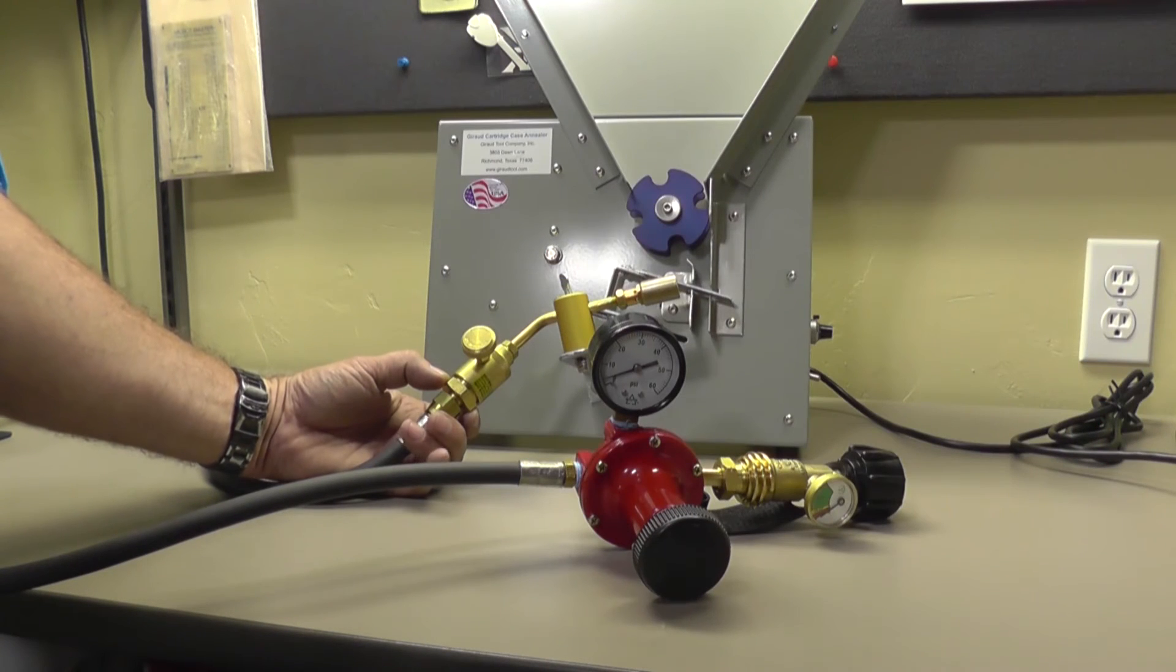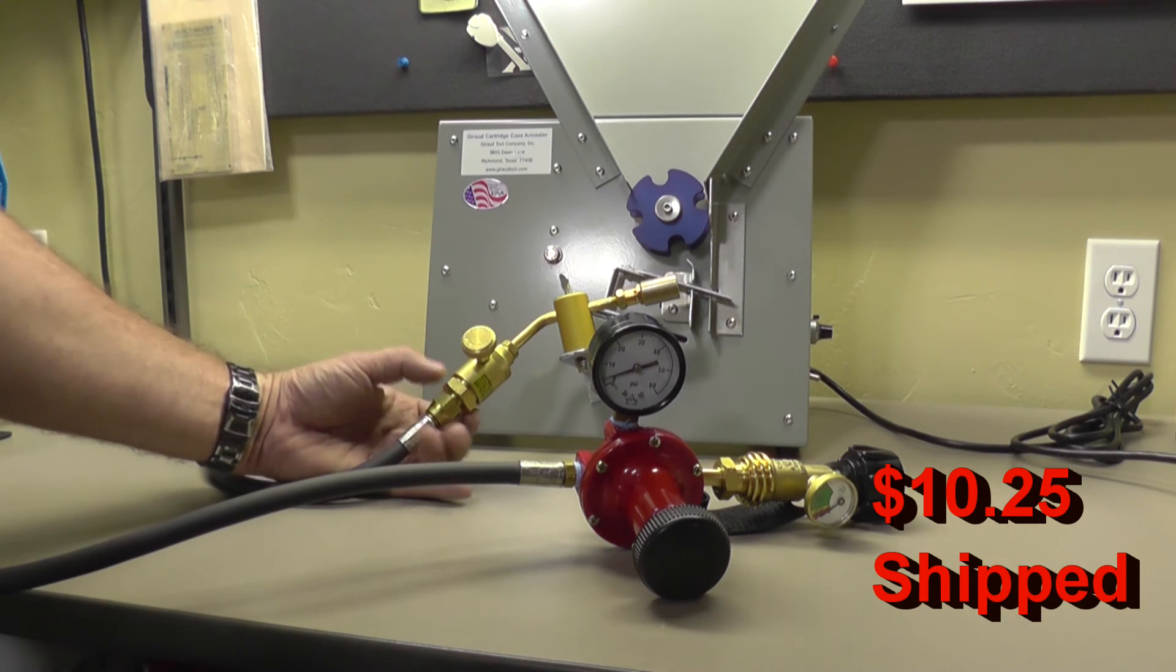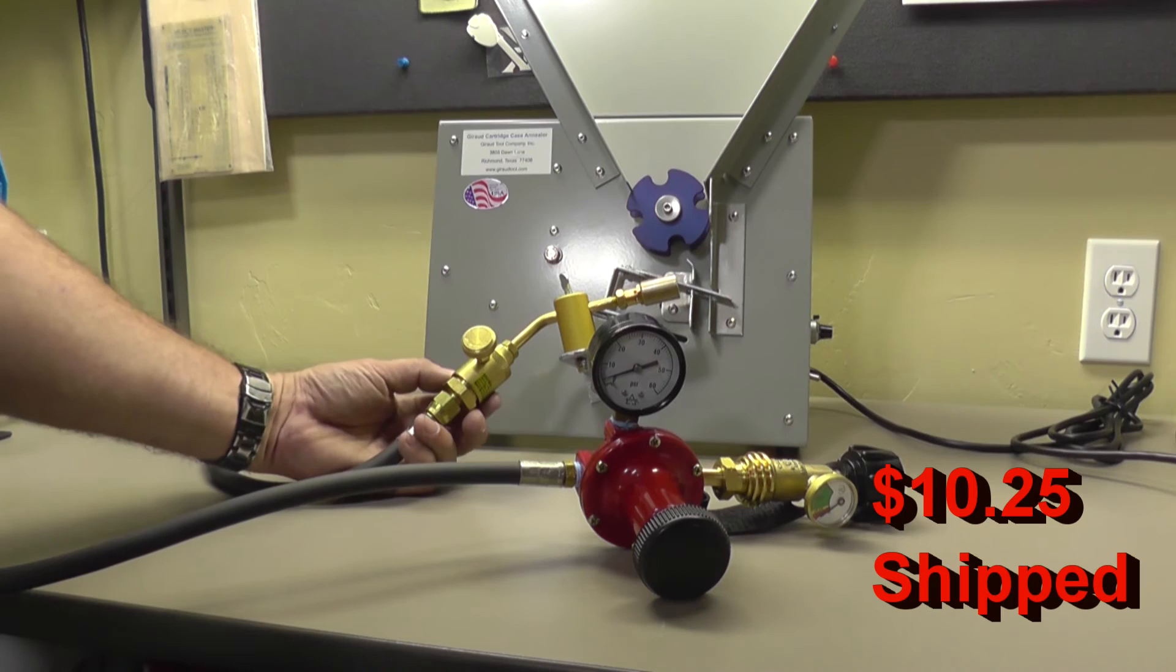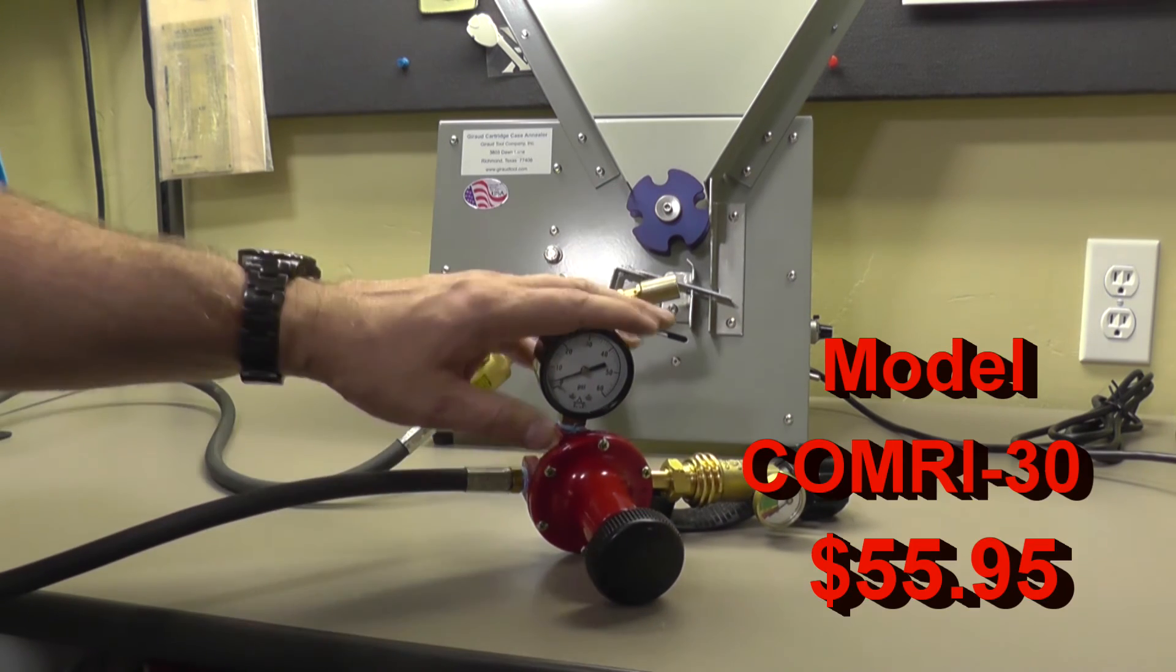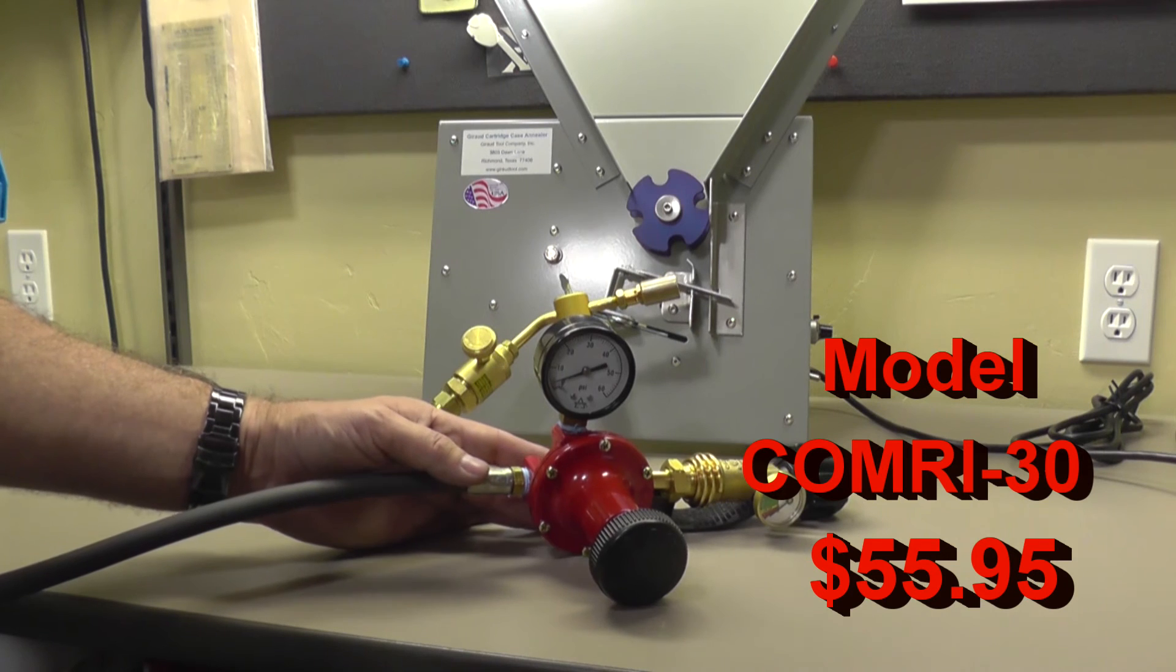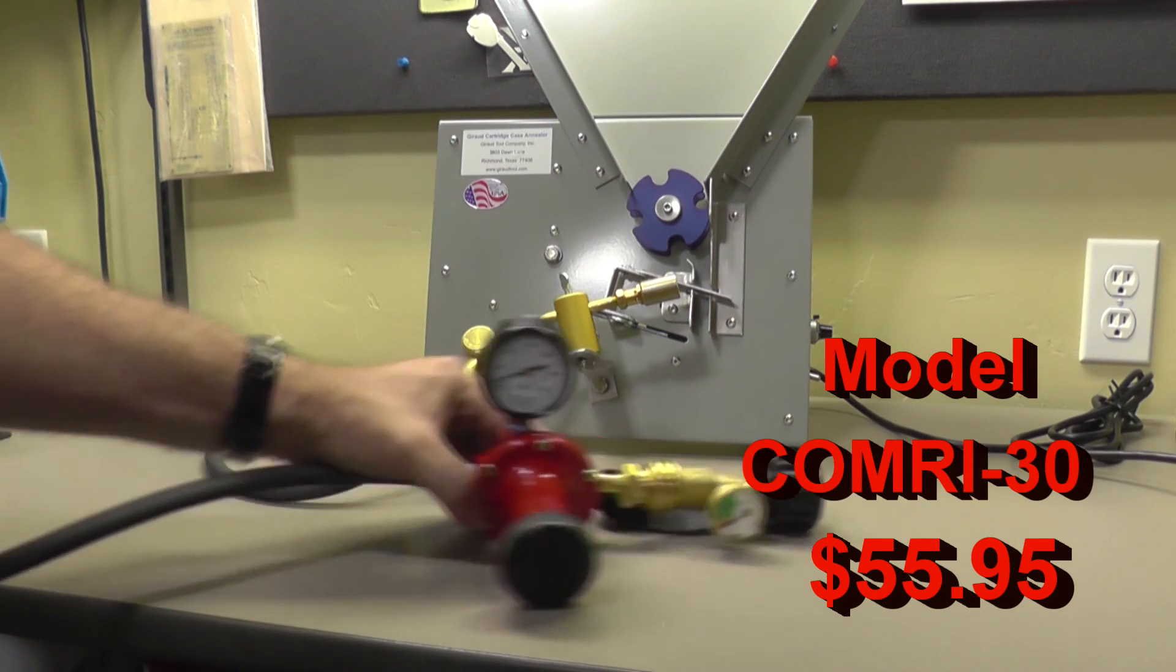So this adapter from Best Materials was $5.25, but with shipping was $10.25. Then the regulator itself with the hose and gauge was $55.95 from teosmokers.com.